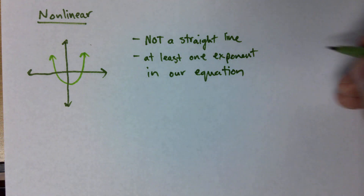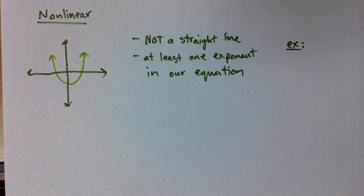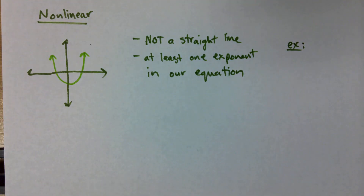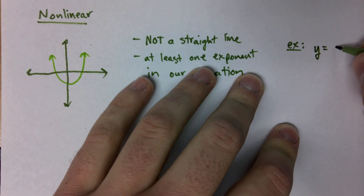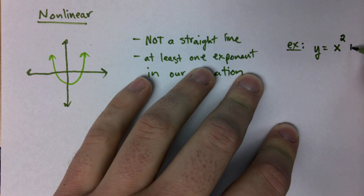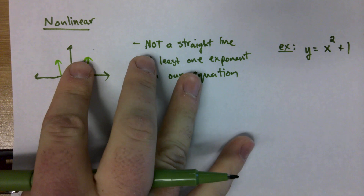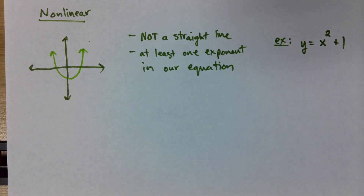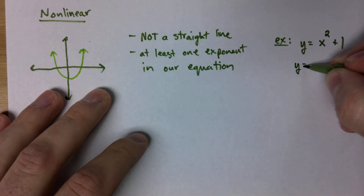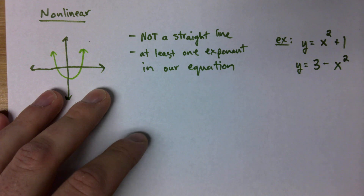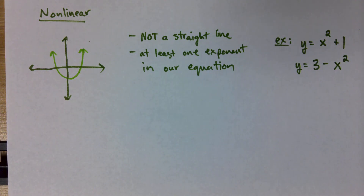What's that going to look like? It's going to look exactly like this — y equals x squared plus one, or y equals three minus x squared. Something like that.